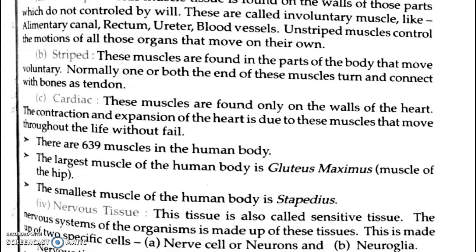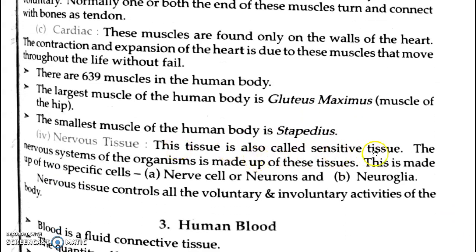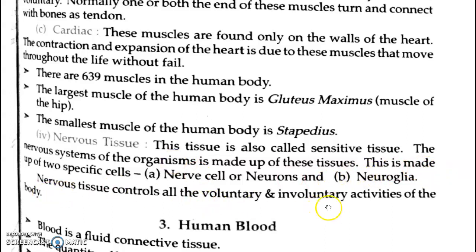Now we come to the fourth type — nervous tissues. These tissues are also called sensitive tissues because they sense stimuli. For example, if you touch a hot surface, the nervous tissue sends a signal up to your brain and your hand is removed. The nervous system is made up of two specific cells: nerve cells called neurons, and neuroglia. Nervous tissue controls all the voluntary and involuntary activity of the body.